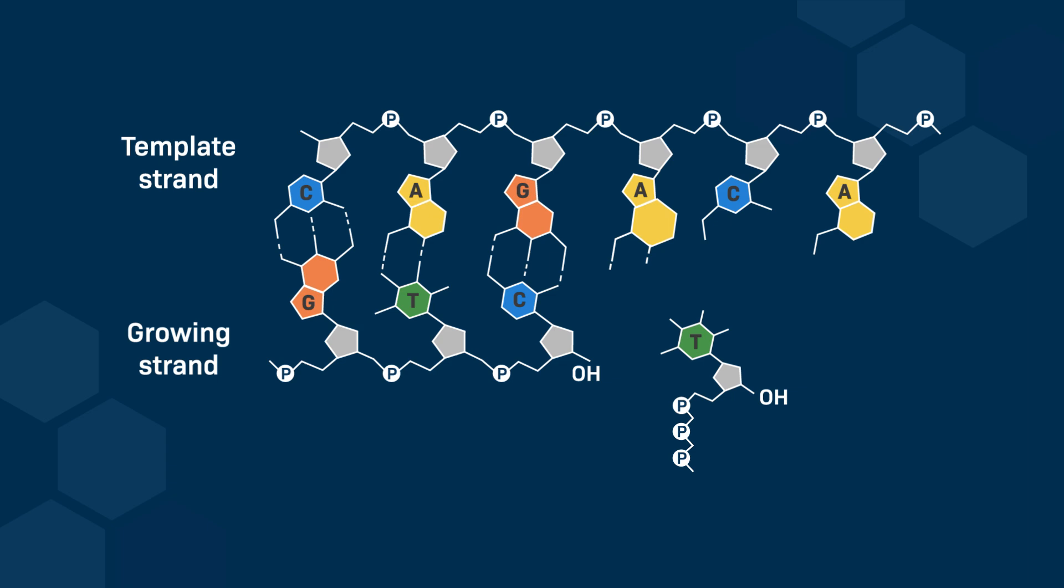The incoming thymine, in its triphosphate form, DTTP, is positioned within the catalytic site, ready to form a new bond. The active site of DNA polymerase ensures precise base pairing by aligning the incoming deoxyribonucleotide triphosphate with the template strand's adenine, A. The 5' alpha-phosphate of DTTP is positioned near the 3' hydroxyl of the last incorporated nucleotide in the growing DNA strand.